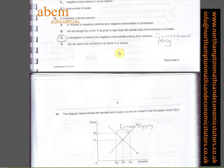Question number fifteen is about the pollution permit. The reason for the answer being C, which is designed to reduce the negative externalities arising from pollution, is a government policy.